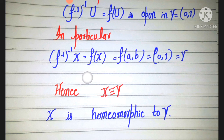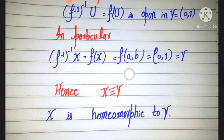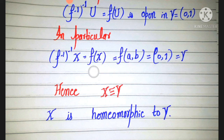The image f(X) = f of the open interval (a, b) = the open interval (0,1) = Y. Since f maps open sets to open sets, f is an open mapping, and therefore f inverse is continuous.